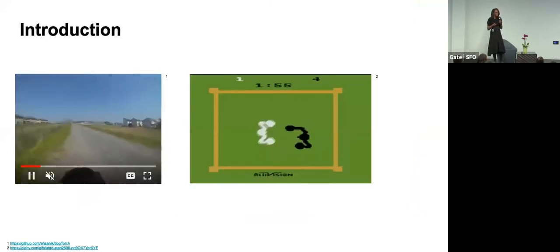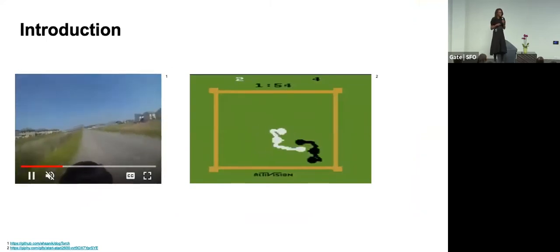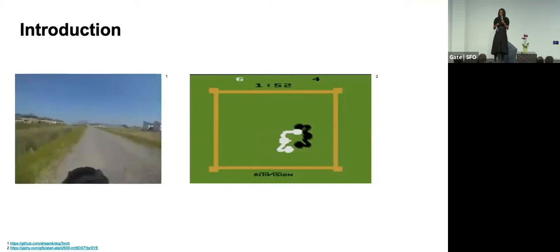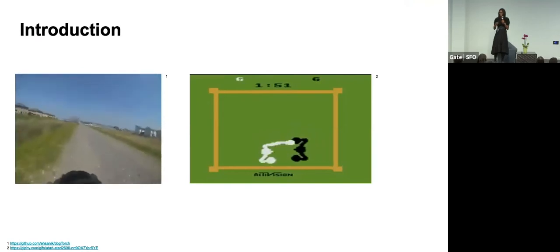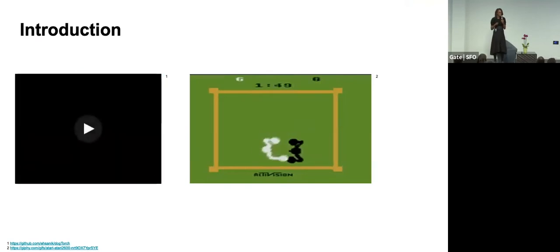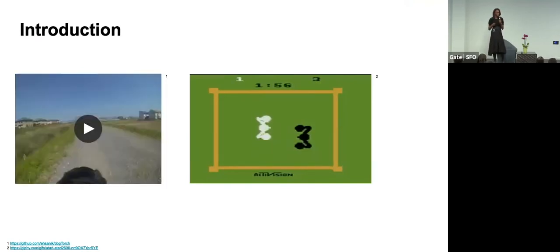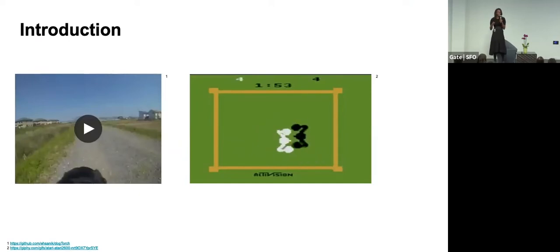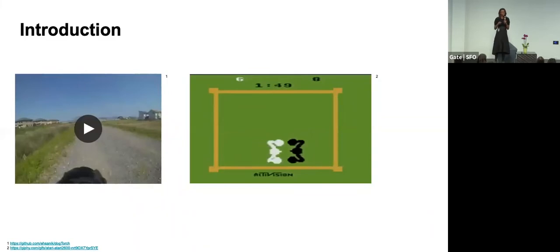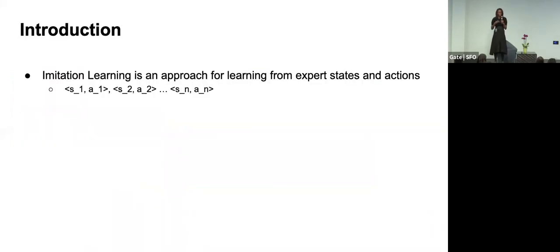The world consists of a lot of data that would be really interesting and useful for training artificial agents to learn. For example, maybe you want to teach a robot how to walk by showing it a video of a dog walking down the street, or maybe we want to teach an agent how to box by showing it a video of people boxing. Typically when we want to train agents using these sorts of examples, we use an approach known as imitation learning.